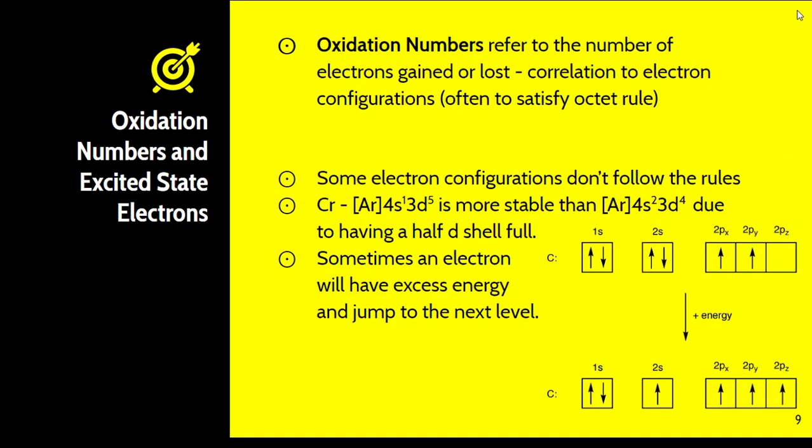We can also determine oxidation numbers from electron configurations — referring to the number of electrons gained or lost, often used to satisfy the octet rule. For example, lithium is number 3 on the periodic table, in the first group, with a plus 1 charge. It is likely to lose an electron to satisfy the octet rule. Some electron configurations don't follow the rules — chromium is a little weird. When you write the electron configuration for chromium, there's only one electron in the S orbital and five in the D. That's because it is more electronically stable than having 2 in the S and 4 in the D shell — a half-full D shell is often more stable than a full S shell.